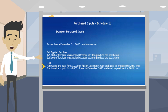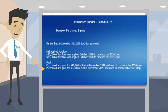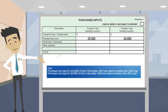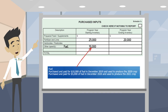Going back to Joe's notes: he purchased and paid for $10,000 of fuel in December of 2019 and used that to produce the 2020 crop. Farmer Joe also purchased and paid for $5,000 of fuel in December of 2020 and used that to produce the 2021 crop. First, we enter fuel under the description column. The $10,000 that Farmer Joe purchased and paid for in December of 2019 and used to produce the 2020 crop goes under the first column, program year starting inventory.